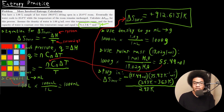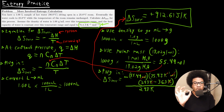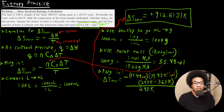A quick tip: always make sure your units cancel out. In this case, moles cancel out, and Kelvin cancels out in the numerator, leaving you with joules per Kelvin. Also note that the result is positive because 363 is greater than 298, giving a negative delta T, and the negative sign in front makes the overall result positive.